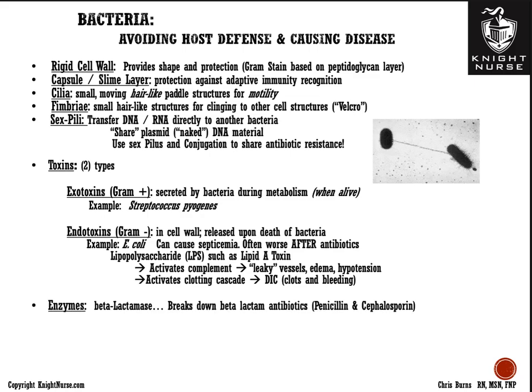Bacteria can also produce enzymes like beta-lactamase. Beta-lactam antibiotics — including penicillin and cephalosporins — contain a beta-lactam ring that binds to the peptidoglycan layer and destroys the bacteria. If an organism produces beta-lactamase, it breaks down these antibiotics and renders them ineffective. As a memory tip: the suffix '-ase' indicates an enzyme that breaks down whatever precedes it, so beta-lactamase breaks down beta-lactam antibiotics.